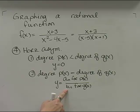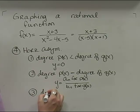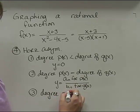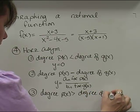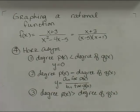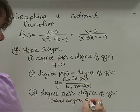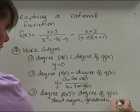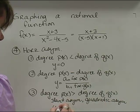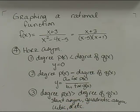The third case is that the degree of p of x is greater than the degree of q of x. Should this happen, then we're going to have a slant asymptote, a quadratic asymptote, a cubic asymptote, or similar, and the way we find this is through polynomial long division.